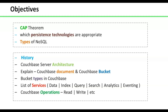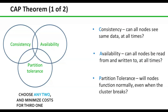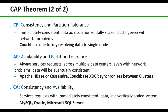We will also cover what is a Couchbase document, the Couchbase bucket, types of buckets in Couchbase, and the list of services supported by Couchbase. CAP means Consistency, Availability, and Partition Tolerance. Any NoSQL database at a time supports any two of these three. One combination is Consistency and Partition Tolerance. Another combination is Availability and Partition Tolerance — Couchbase is also part of it.